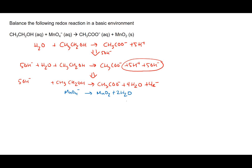Next, balance out the hydrogen atoms. There are none on the left and 4 on the right, so we add 4H+ to the reactant side. Now that the atoms are balanced, we add OH- to neutralize the H+ — 4 OH- to both the reactant side and the product side.